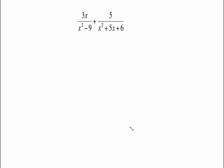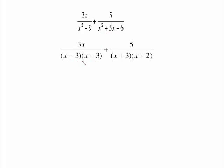Now we have our common denominator and the new numerators. Combine like terms: 10 and 28 can be added. The numerator doesn't factor, so we're finished with that problem. Starting the next one from scratch: if the denominators are factorable, that must be your first step. x² − 9 is a difference of two squares, and the trinomial factors by trial and error.